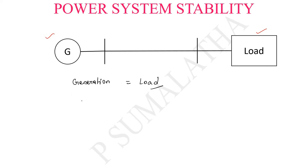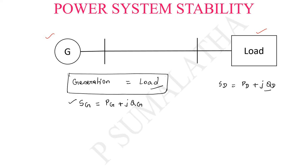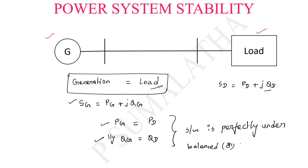In an AC system the power represents the complex power. So the power generated by the generator is SG, equal to the summation of real power plus reactive power. Similarly the power received by the load equals the power demand, which is real power demand plus reactive power demand. This condition implies that the real power generation should equal the real power demand, and the reactive power generation should equal the reactive power demand. If these two conditions are satisfied, the system is perfectly under balanced or stable condition.